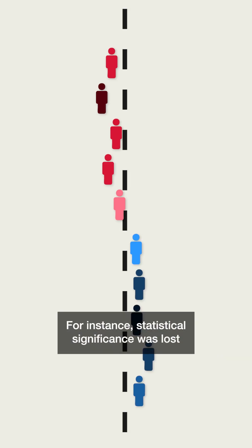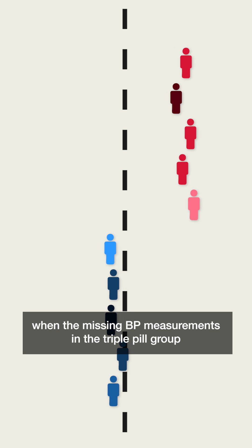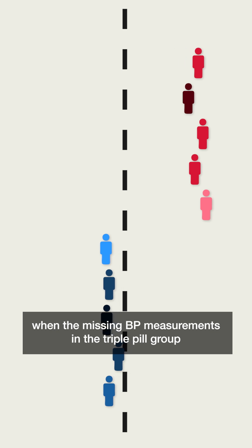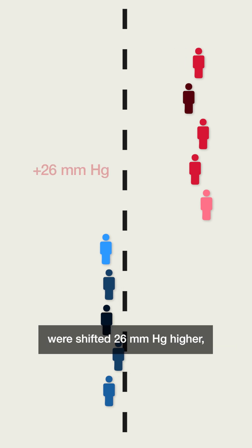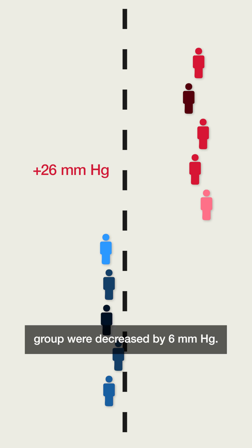For instance, statistical significance was lost when the missing BP measurements in the triple-pill group were shifted 26 millimeters of mercury higher, while simultaneously BP measurements in the standard care group were decreased by 6 millimeters of mercury.